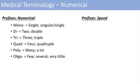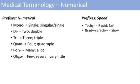For prefixes related to speed, we have tachy, which means rapid or fast. And brady, which means slow. For these terms, you typically think of the heart — you can have tachycardia or bradycardia, which are just different terms to describe the speed of the heart rate.